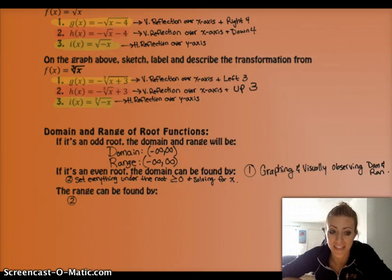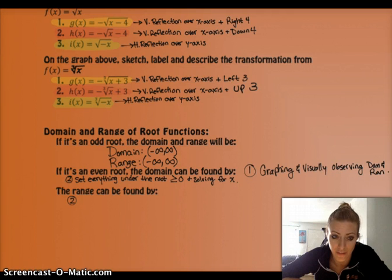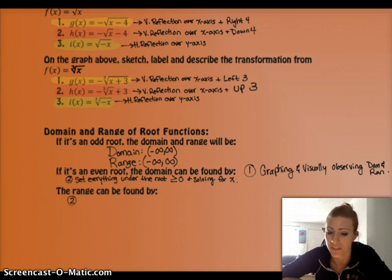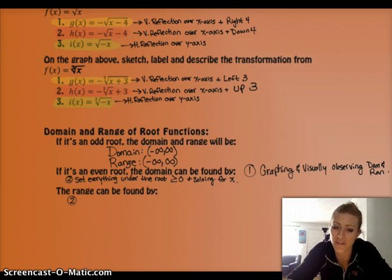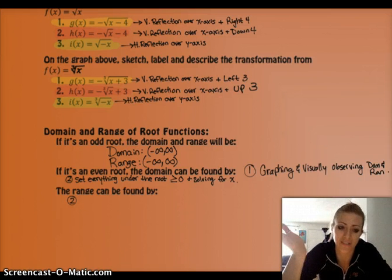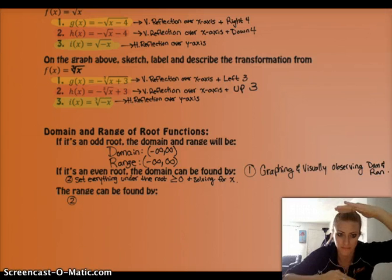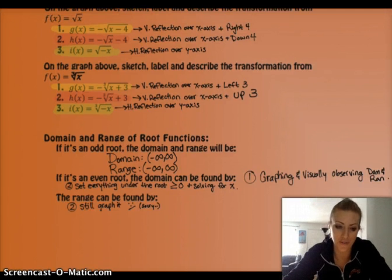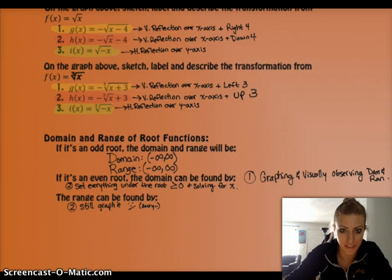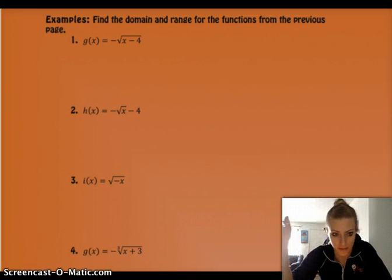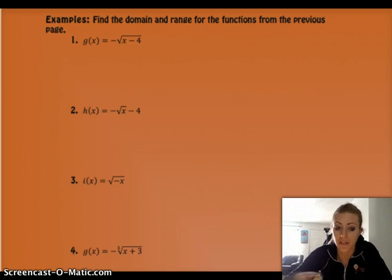For the range, I still recommend graphing it — it's a lot harder to figure out without the graph. It's just all possible y values, and it's really hard without the graph. Just sketch a graph so you know where it lies. Alright, let's find the domain and range for the last couple of examples that we did. I'm going to do the really easy ones first, which are all the cube roots.